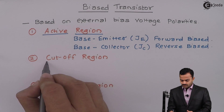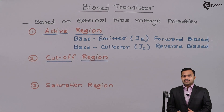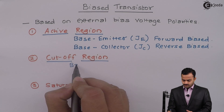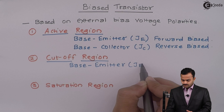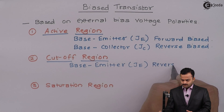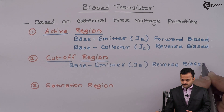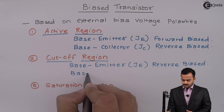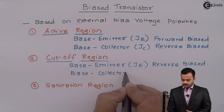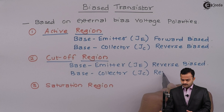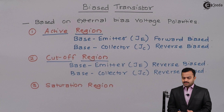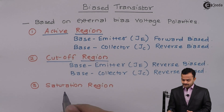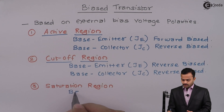In the cutoff region, both junctions are reverse biased. Whereas in the saturation region, we apply external voltage such that both junctions are forward biased.